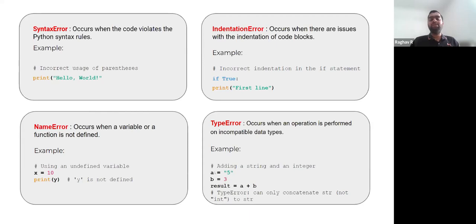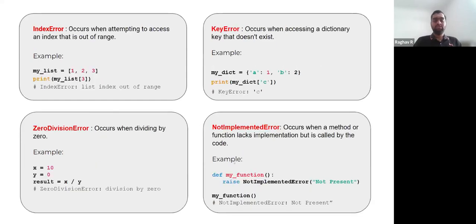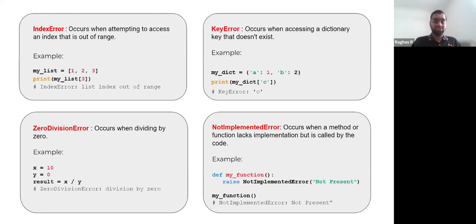We also have the index error. For example, if you have a list of three elements and you want to query the fourth element, the fourth element is not present — you have gone out of range of that list, so you will get an index error. We are querying for index 3 because in programming languages, indexing starts from zero, so there is a zeroth, first, and second element, but no third element.